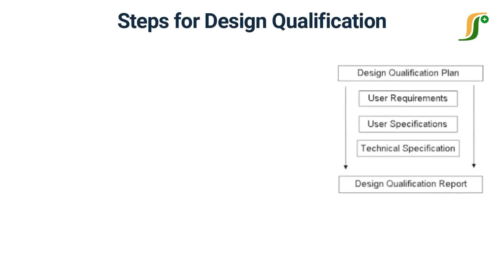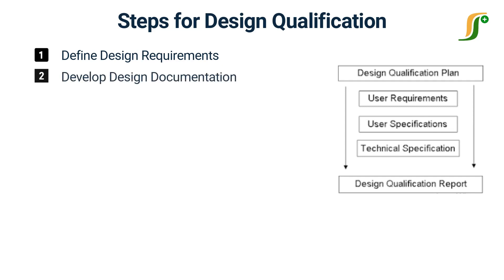The overall process of design qualification typically includes various steps. First of all, define design requirements: clearly define the requirements and specifications for the system or equipment being designed. This includes identifying the intended use, performance criteria, regulatory and quality standards, and any other relevant requirements.